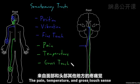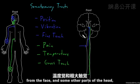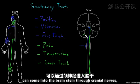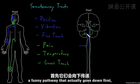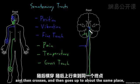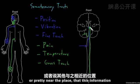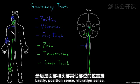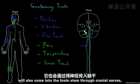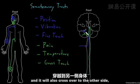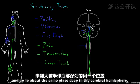Pain, temperature, and gross touch sense from the face and some other parts of the head come into the brainstem through cranial nerves, taking a pathway that actually goes down first, then crosses, and then goes up to about the same place. Likewise, position sense, vibration sense, and fine touch sense from the face and head also come into the brainstem through cranial nerves, cross over to the other side, and go to about the same deep location in the cerebral hemisphere.